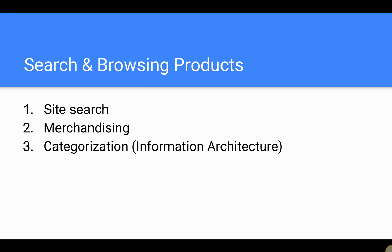First, browsing and searching for products — what does this mean and how does it affect you? You're going to want to look at your site search; it's a very key component. Most e-commerce platforms come with a built-in site search. A user comes to your site, they know what they want, and they enter that product directly into the site search. It's one of the most important items of an entire e-commerce website.